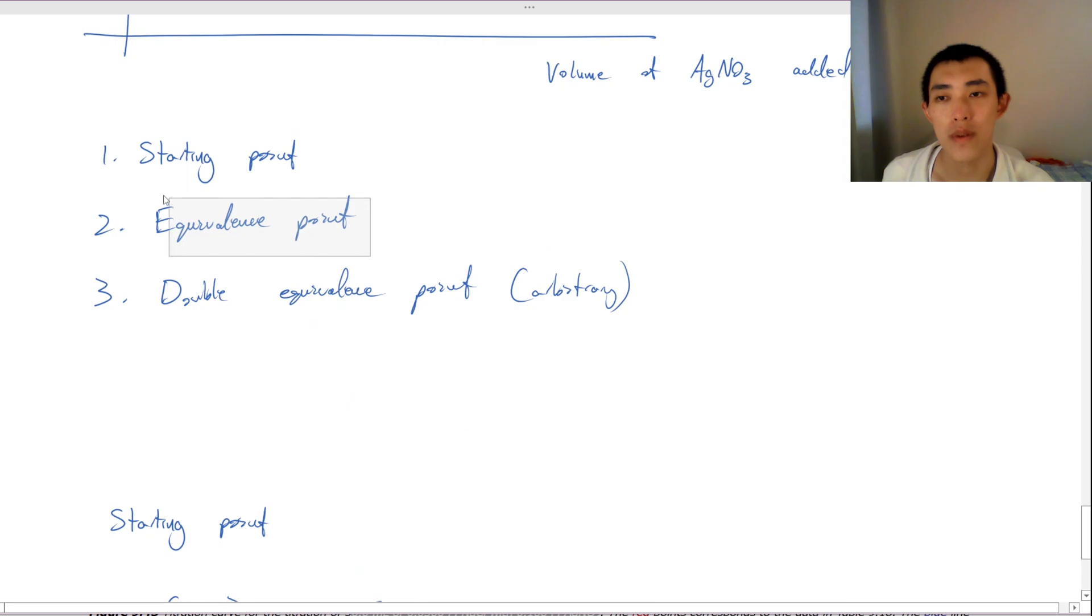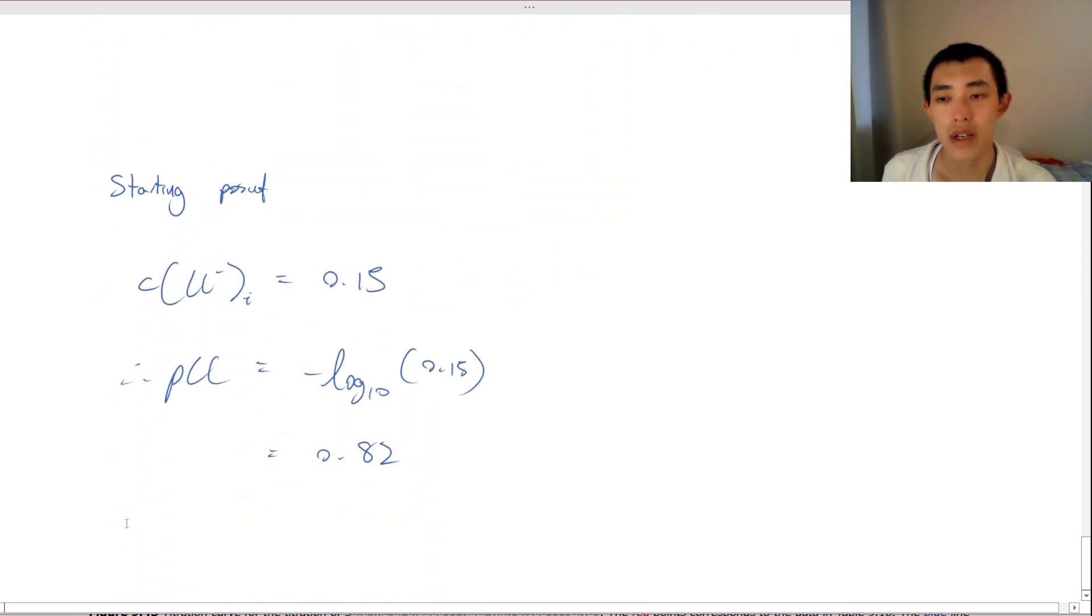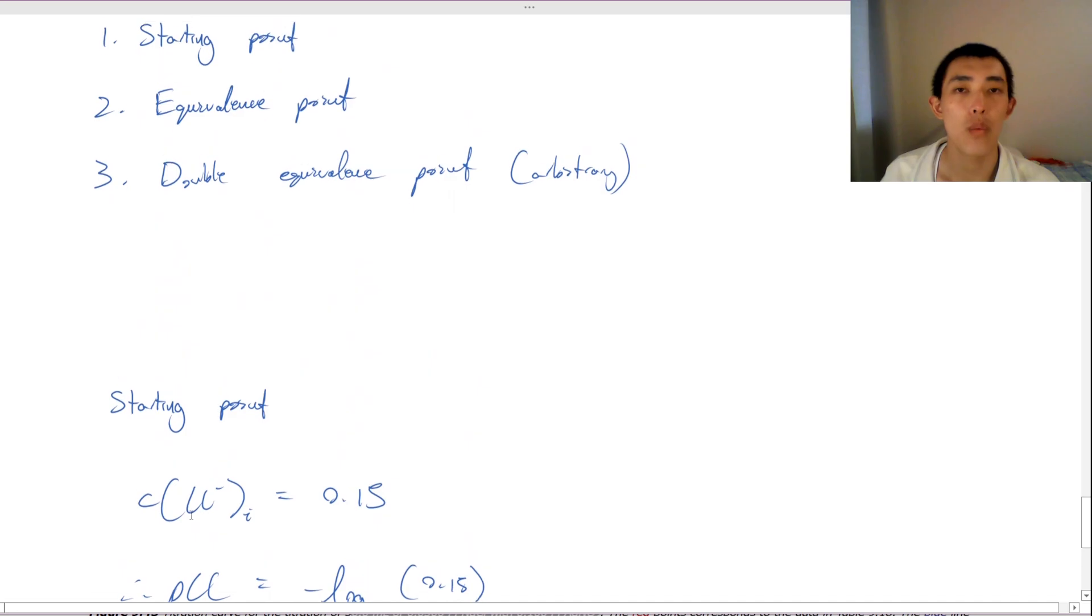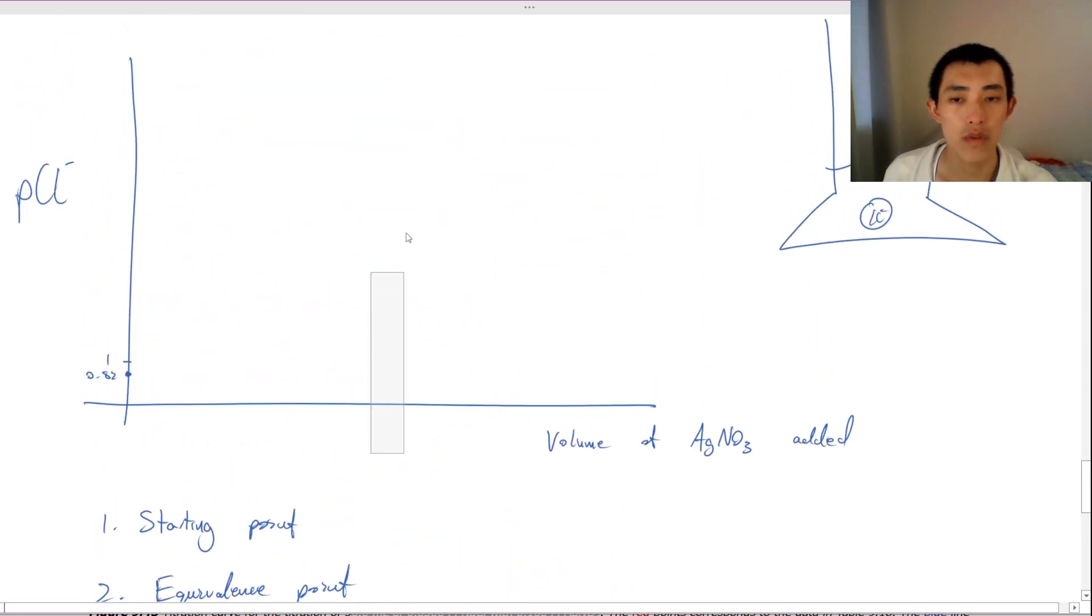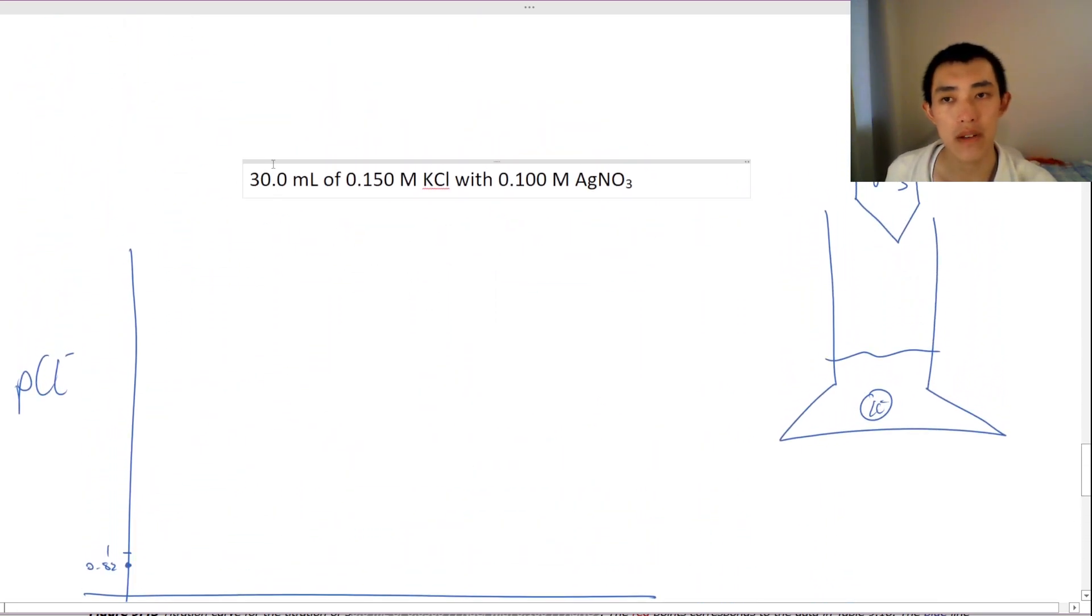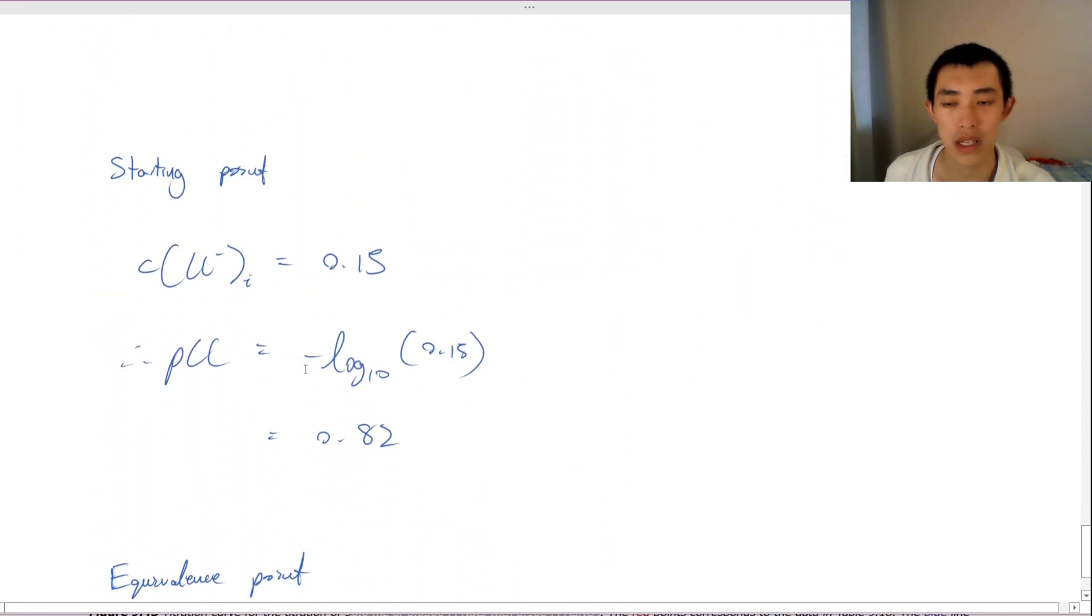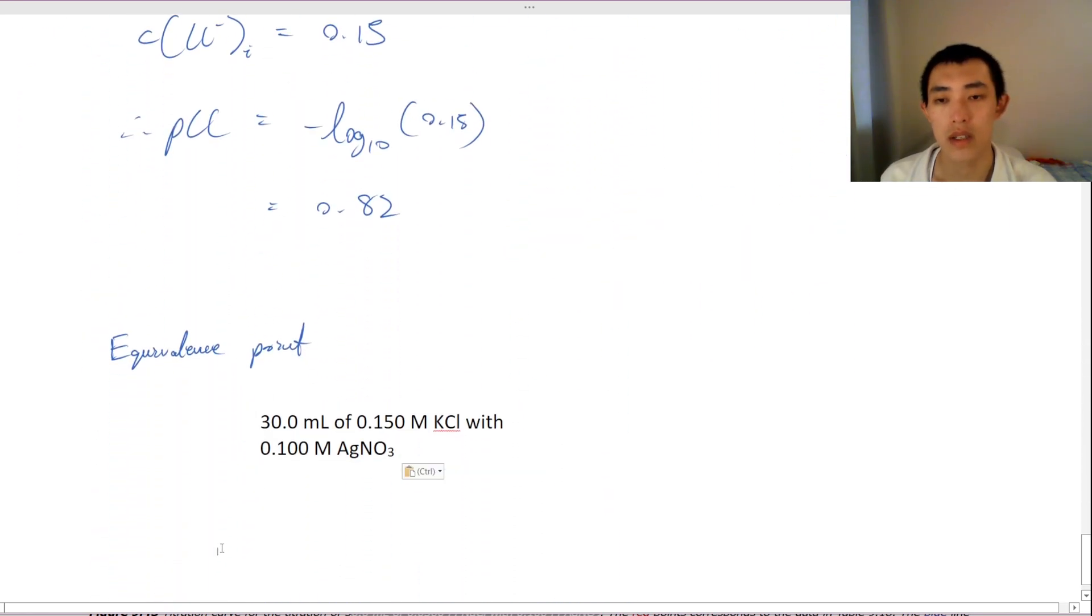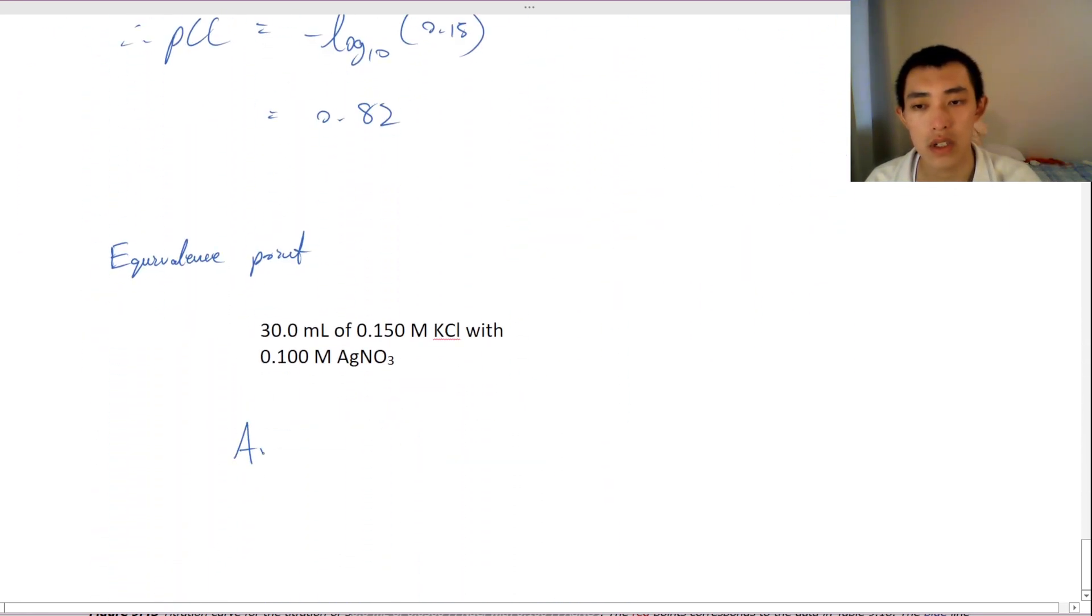Let's find my equivalence point now. This one's a little bit more tricky. So first we need to find out when does equivalence point occur at? Which volume does it occur at? But thankfully, it's not too hard if we have a look at the equation. So we're going to have AgNO3 plus KCl, giving us AgCl plus KNO3 aqueous. Of course, this doesn't actually matter because KNO3 is fully soluble. No one cares about it.